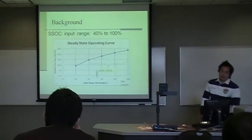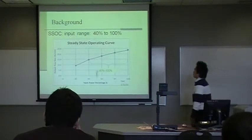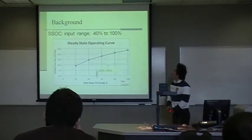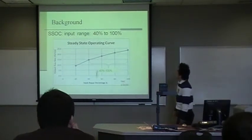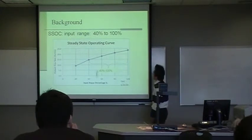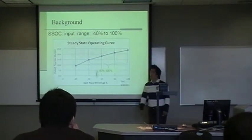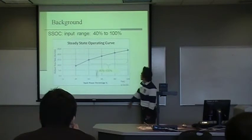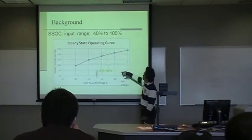As you can see, our input range is from 40 to 100% and we see intervals about 20%. As you can see in this graph, it's pretty linear from 40% to 100%.